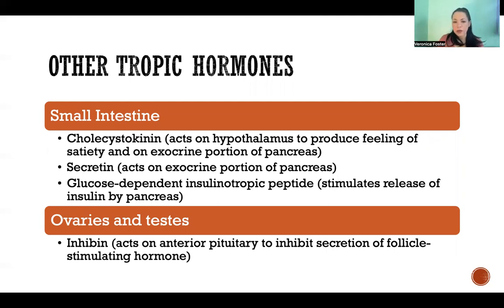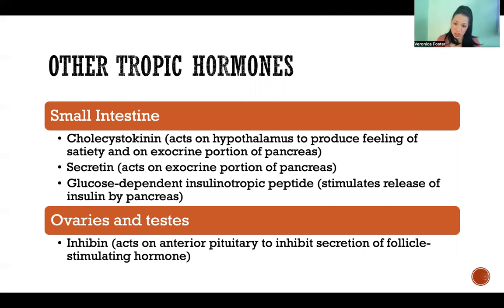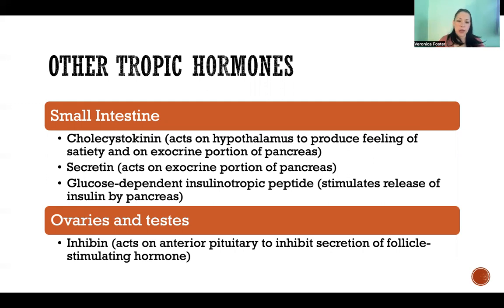Cholecystokinin also acts on the exocrine portion of the pancreas. Because both the hypothalamus and the pancreas are considered endocrine glands — in addition to the hypothalamus being part of the brain and the pancreas also being an exocrine gland — because they both are considered endocrine, cholecystokinin is considered a tropic hormone.